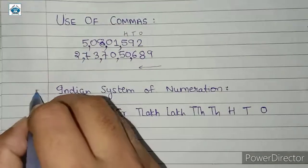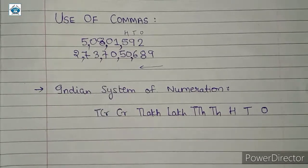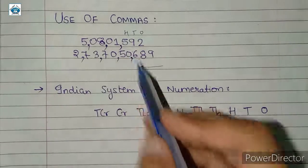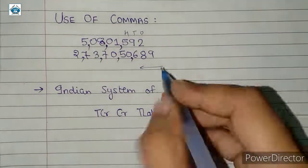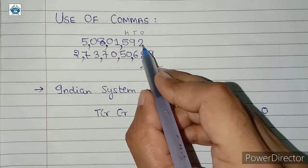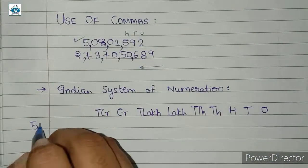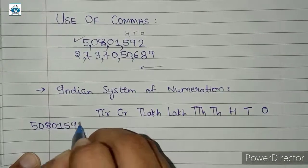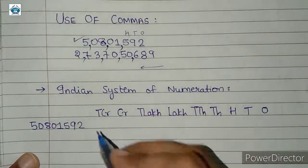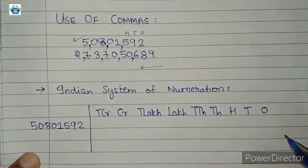So in this way we can use commas according to the Indian system of numeration. Now, considering the Indian system of numeration, we will be naming these numbers and trying to read them. Let us arrange them in the placement boxes. We begin with the number in the ones place. Consider this number: 50801592. We need to arrange the digits in the placement boxes.